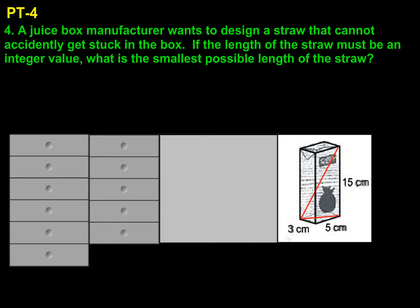Number 4. A juice box manufacturer wants to design a straw that cannot accidentally get stuck in the box. If the length of the straw must be an integer value, what is the smallest possible length of the straw? If we take a look at the box, you can see the main triangle we want to find right here. I'll throw some color in it to help highlight it.